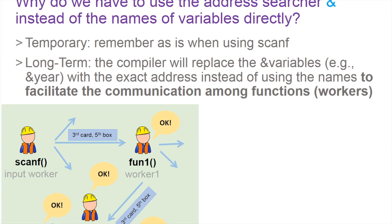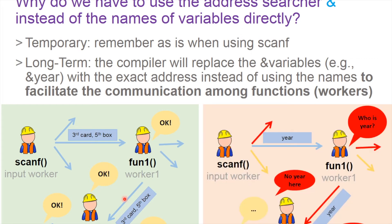For example, here you can see those workers are communicating through the address directly. The address is unique everywhere, so it will be better for communication between those workers.